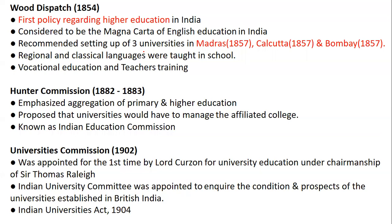Wood's Dispatch is known as the Magna Carta of English Education — a question appeared in 2021. It was the first policy regarding higher education, recommending three universities: Madras, Kolkata, and Bombay, including regional and classical languages, and vocational education. The Hunter Commission (1882–1883), also called the Indian Education Commission, emphasized primary and higher education and proposed that universities should manage affiliated colleges.